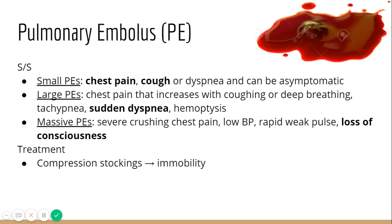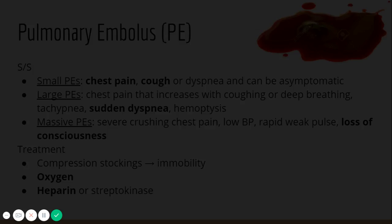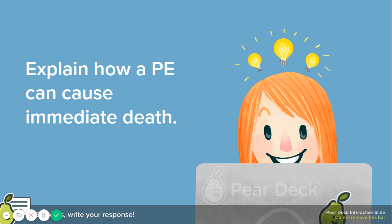Treatment options include compression stockings for immobile patients, which squeeze the legs to keep circulation moving and prevent clot formation. TED hose gently massage the legs to also increase circulation. If a PE is confirmed, oxygenation is the top priority. Anticoagulants such as heparin or thrombolytics like streptokinase are given to break down the clot and reverse its effects.